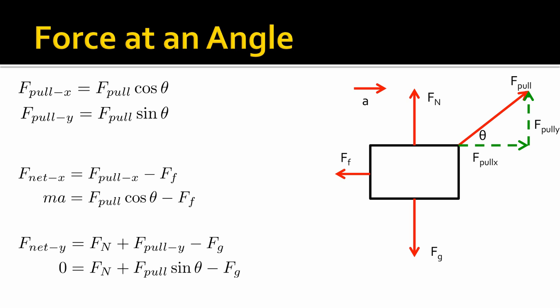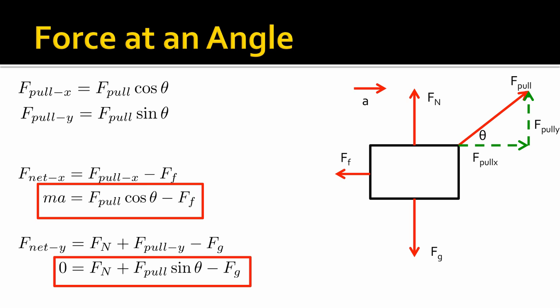In the y direction, there's no acceleration, so we get to pick — up is positive, down is negative. That means F normal is positive, F pull y is positive, and F gravity is negative. We add all those forces with the correct signs. Since there's no acceleration in the y direction, ma equals zero, giving us our y-direction equation. These two equations are our net force equations to solve this problem. From here we plug in any numbers we have, rearrange to solve for whatever we're looking for, and proceed.